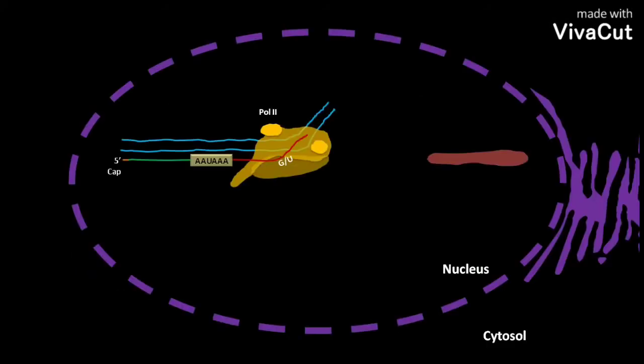In the nucleus of a eukaryotic cell, the RNA polymerase II or POL2 synthesizes RNA on a template DNA.